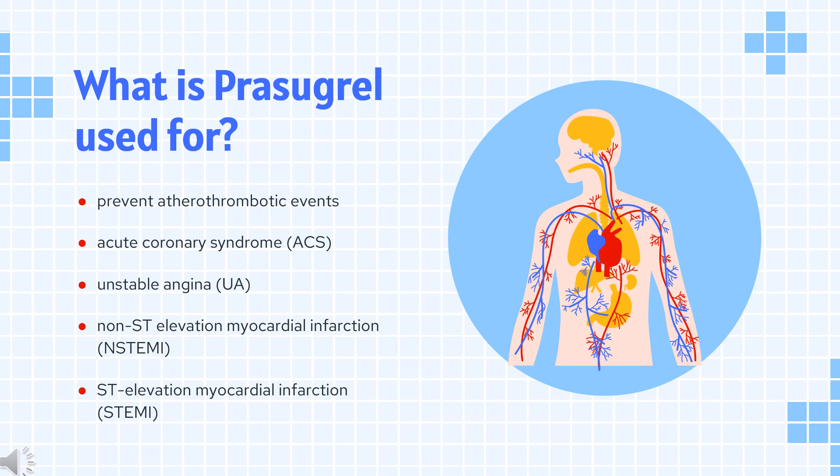Prasugrel is not recommended in patients 75 years of age or greater, those that weigh less than 60 kg, and patients with a history of stroke or transient ischemic attack, due to increased risk of fatal and intracranial bleeding.